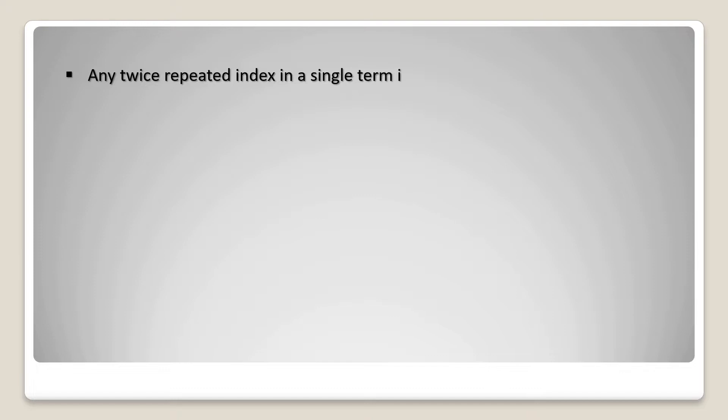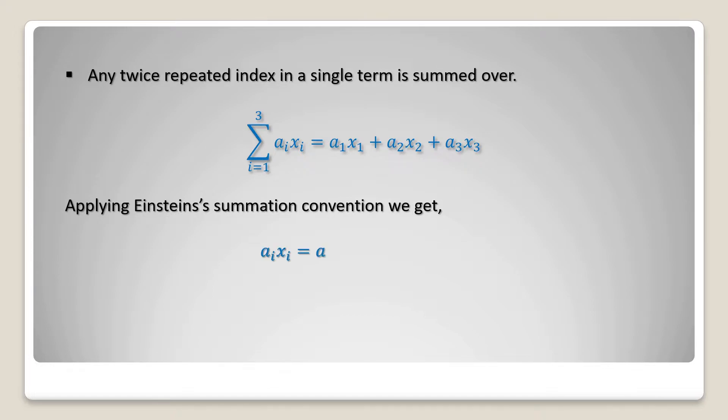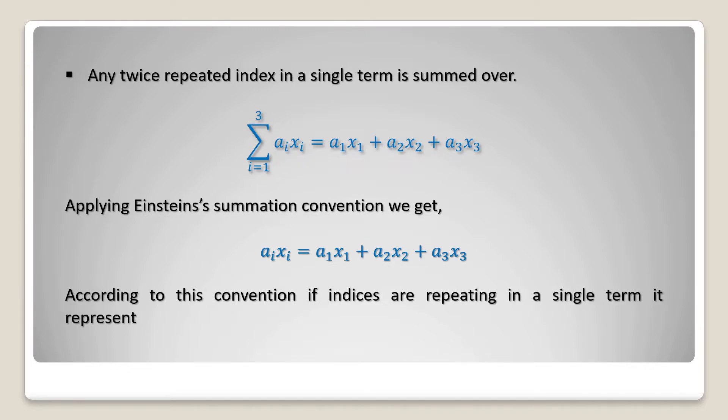Any twice repeated index in a single term is summed over. For example, summation i goes from 1 to 3: ai xi equals a1 x1 plus a2 x2 plus a3 x3. Applying Einstein's summation convention, we get ai xi equals a1 x1 plus a2 x2 plus a3 x3. According to this convention, if indices are repeating in a single term, it represents summation.